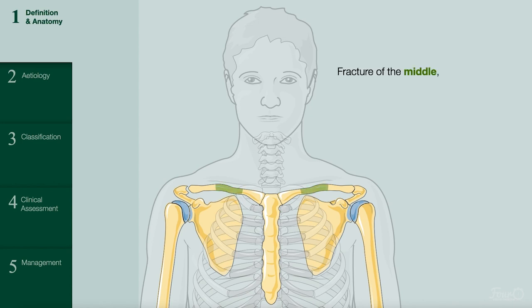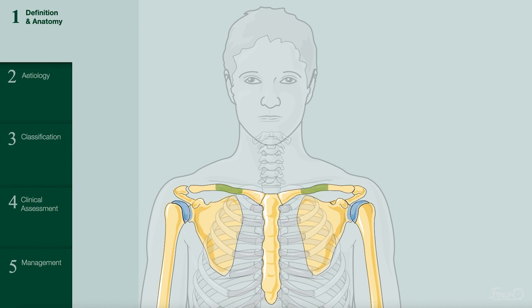A clavicle fracture is the fracture of the middle, lateral, or medial third of the clavicle. Fractures of the middle third of the clavicle, known as mid-shaft fractures, are the most common type, as the middle portion of the clavicle has less structural support.